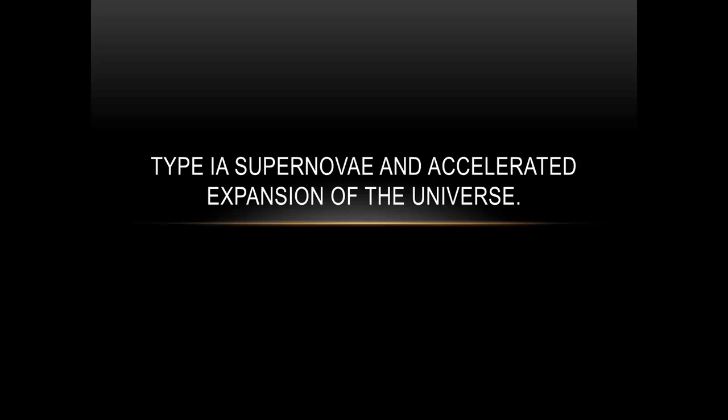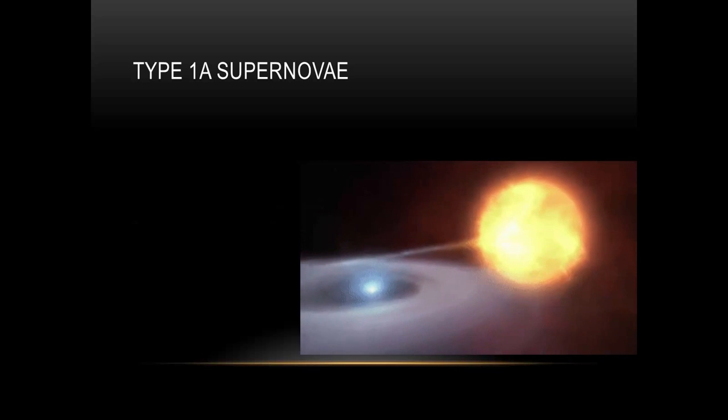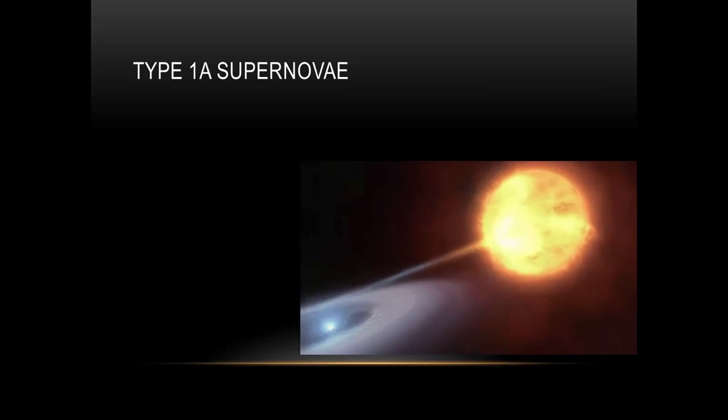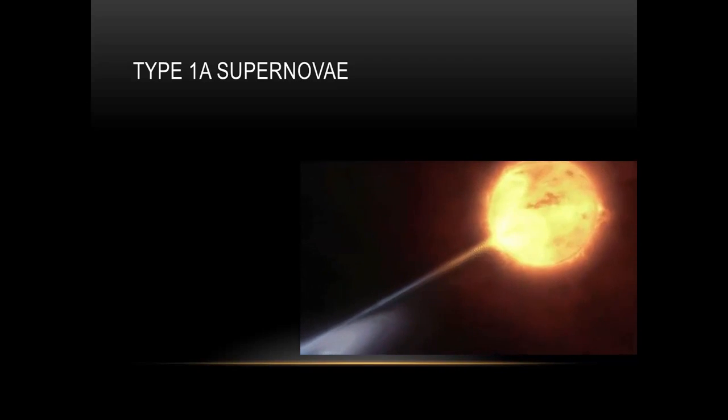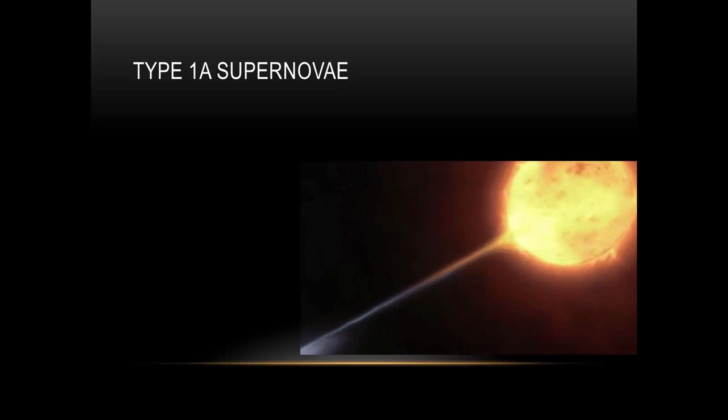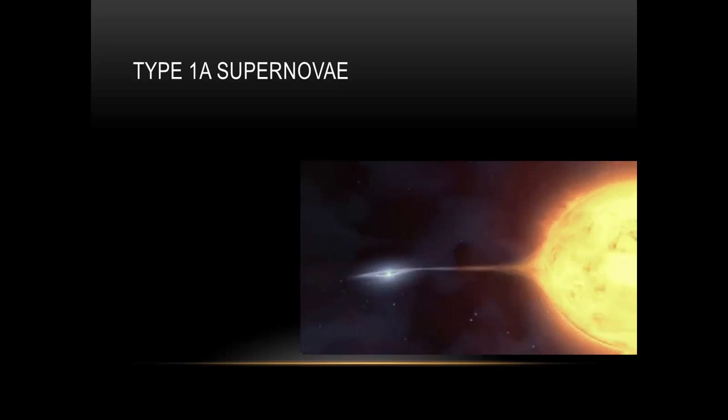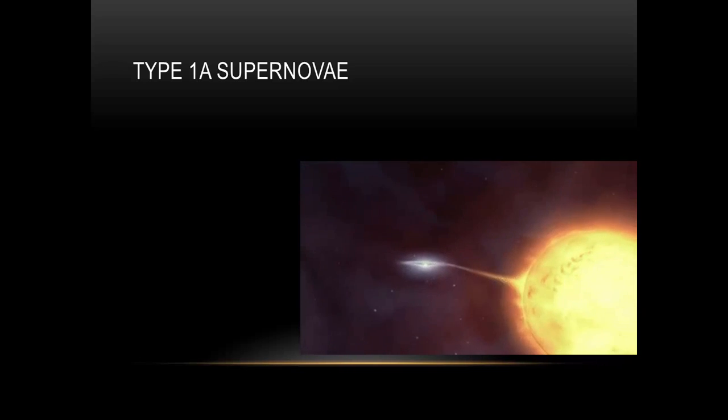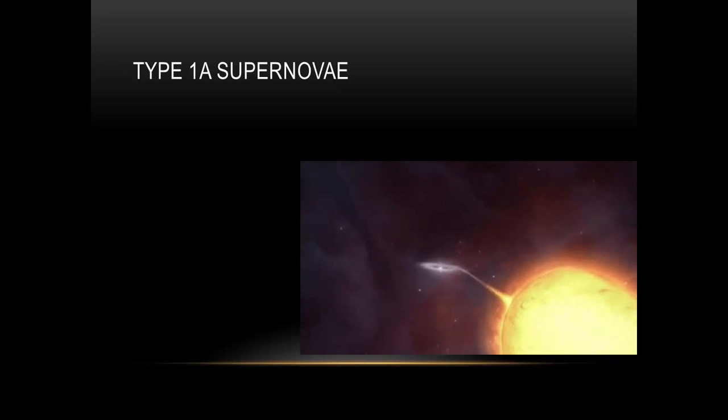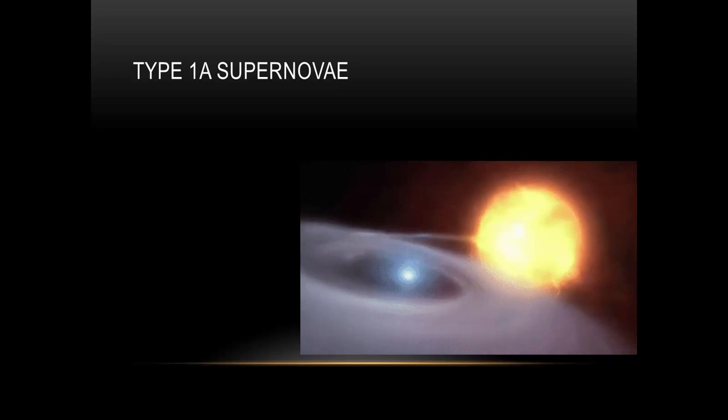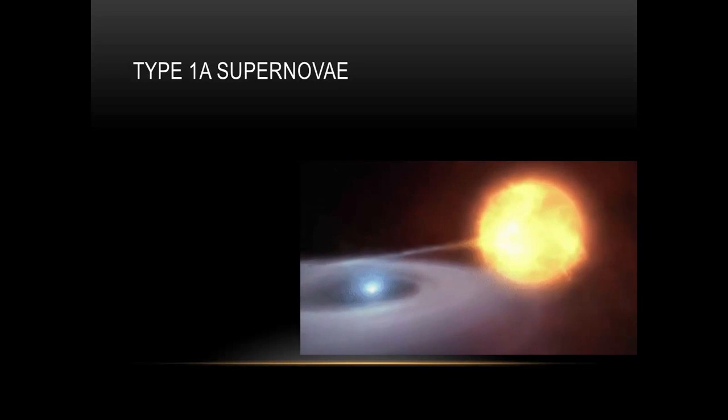We need to discuss the importance of type 1a supernovae and the accelerated expansion of the universe. A type 1a supernova is a white dwarf which is next to its binary partner. The mass is being sucked from the partner into an accretion disk which goes around the white dwarf. It becomes unstable and will explode. And this is a type 1a supernova.